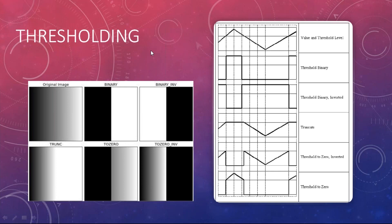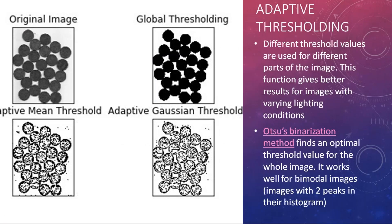The next concept is adaptive thresholding. A major problem with regular thresholding is that a captured image may have different light intensities at different places. Adaptive thresholding goes through each part of the image and, according to the local color intensity, applies a threshold that is more appropriate for that region, resulting in a more uniform final image.